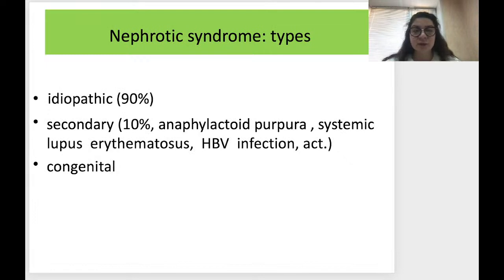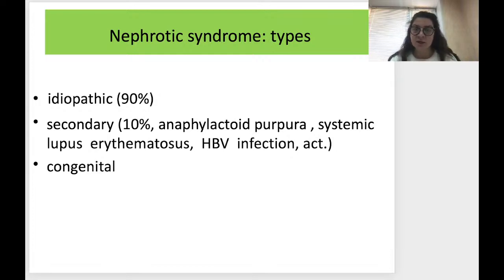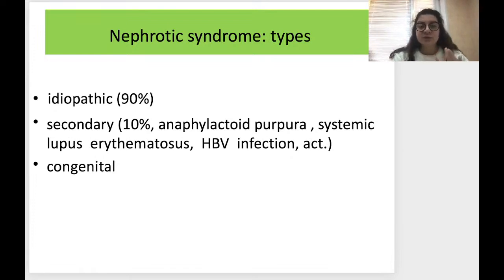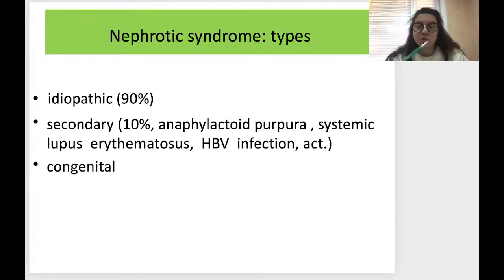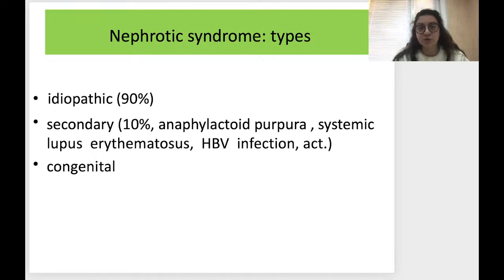Regarding types of nephrotic syndrome: in most cases — nearly 90 percent — it is idiopathic, meaning we cannot find any significant exact cause. In 10 percent of cases it can be secondary, where some disease leads to proteinuria and nephrotic syndrome. These secondary causes can include anaphylactoid purpura, systemic lupus erythematosus (SLE), hepatitis B virus (HBV) infection, and others. In some cases, it can be congenital.